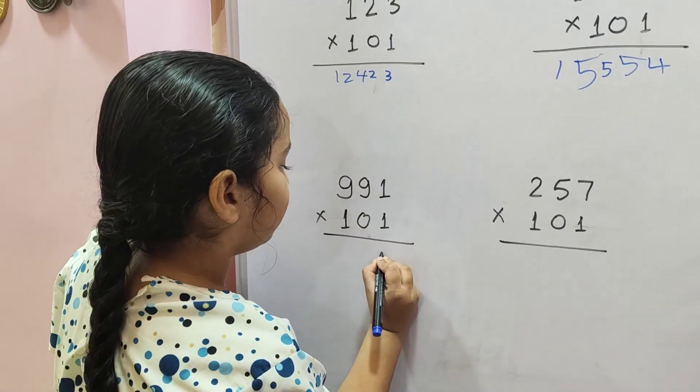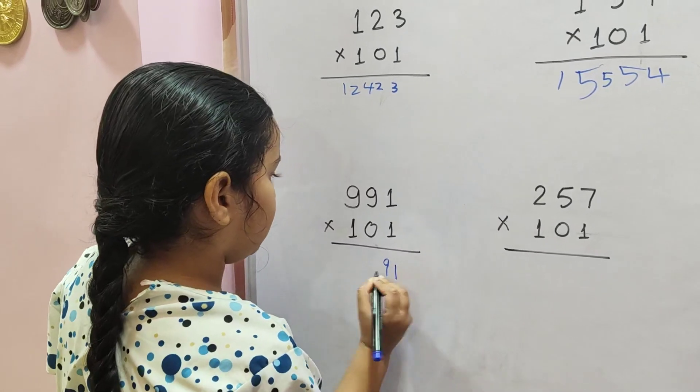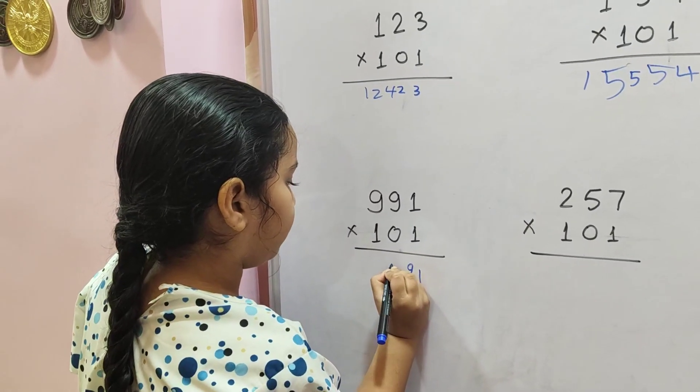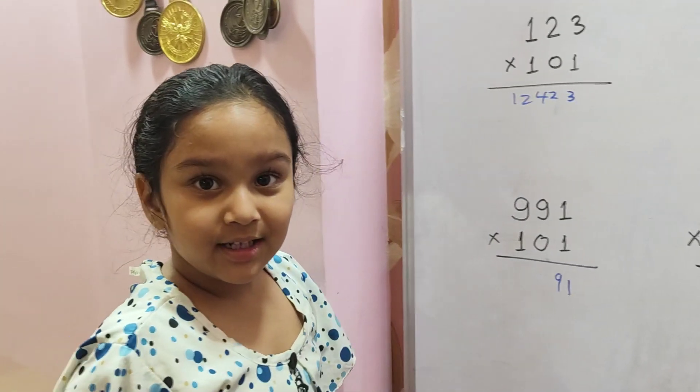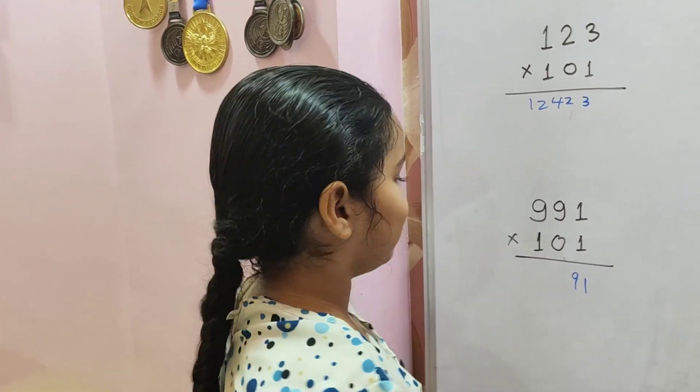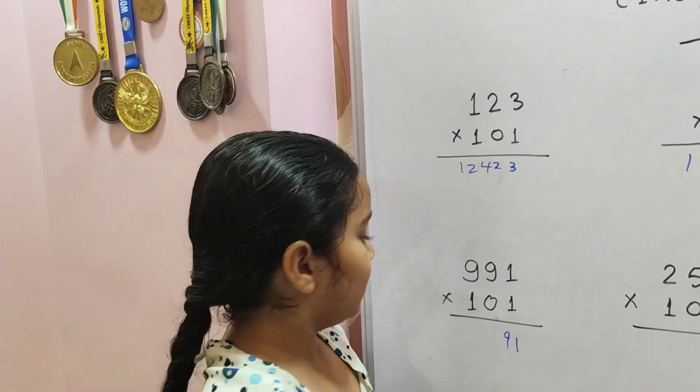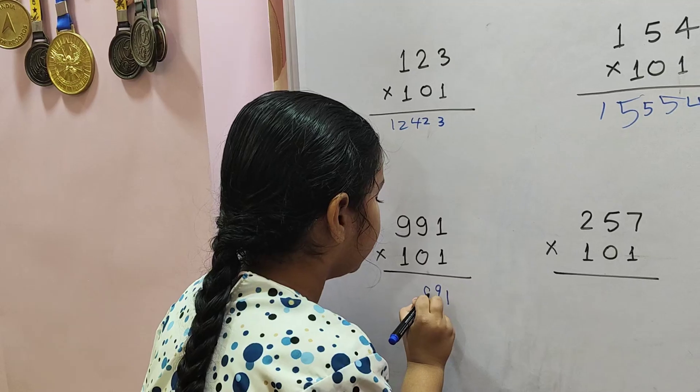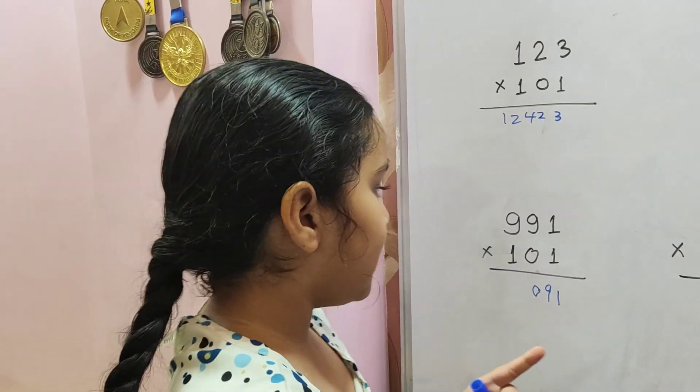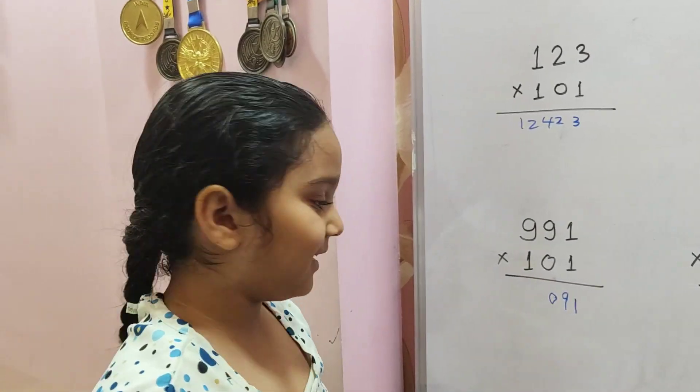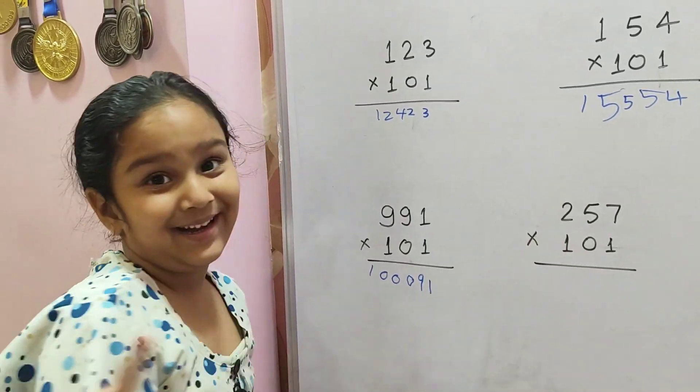Now we will do 991. Then we are going to do 9 plus 1 is 10, so it's a little different. I am going to tell you what to do. From the 10 we have to add the 0, and then 1 is in hand. Then 99 plus 1 is 100. We'll write 1, 0, 0, 100.